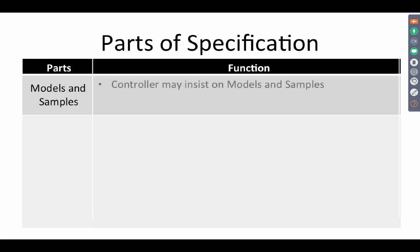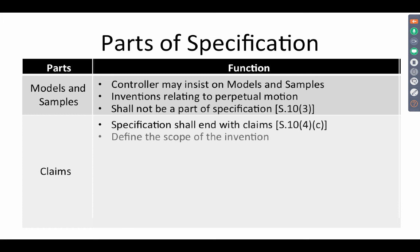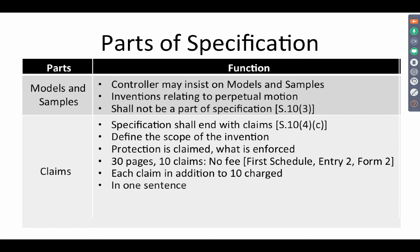Models and samples — the controller may insist on models and samples. For inventions related to perpetual motion, the controller may insist on a working model. They shall not be a part of the specification. Claims — the specification shall end with the claims. They define the scope of the invention and what protection is claimed, which is what gets enforced in an infringement suit. There is a limit of 30 pages for the description and 10 claims with no extra fee. Each claim in addition to 10 is charged. The claim shall be in one sentence.